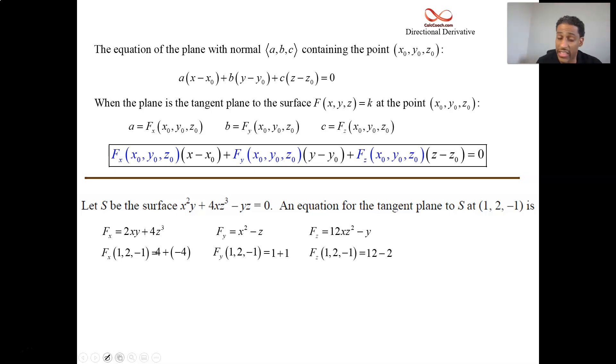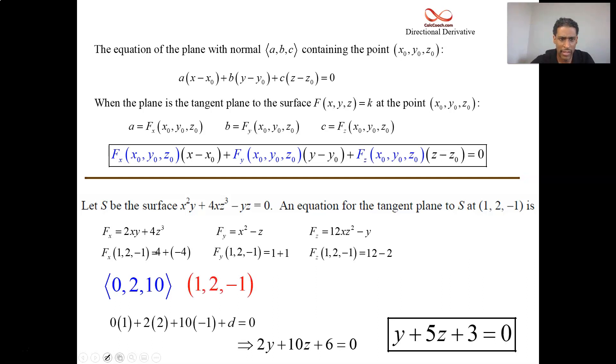So this normal vector to the tangent plane is 0, 2, 10. And what do we do with that? We take that along with the point, and we plug them in. We figure out the value of D, and we have the equation of the plane. So the point was 1, 2, negative 1. We take the 1, 2, negative 1, the 0, 2, 10. We multiply 0 times 1 and 2 times 2 and 10 times negative 1 plus D is equal to 0. And we can backtrack and figure out the equation of the plane. That tells us that D is equal to 6. And so we then have 0X and 2Y and 10Z plus 6 equals 0. And if you get to the equation, you recognize they have something in common. You could factor that out. So we have Y plus 5Z plus 3 equals 0.